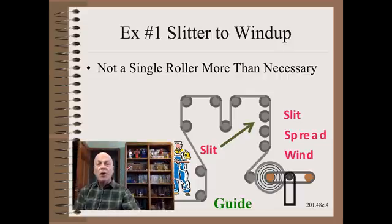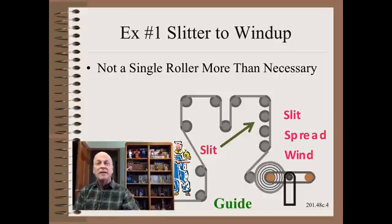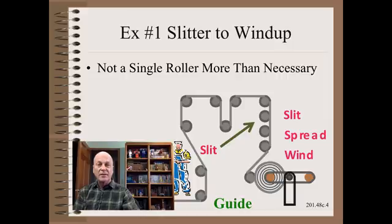Now, if we also recall that the unwind must be placed close to the slitters to reduce trim that is thrown away, and the slitters must be placed close to the winder to get good roll edges, we see we have little choice than to design a compact machine. This was the first commandment of web machine design as I have preached on many occasions.